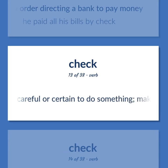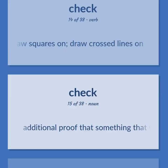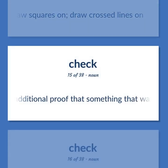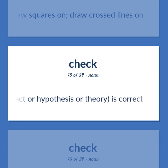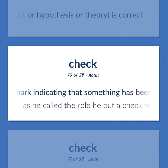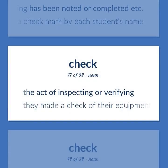Be careful or certain to do something; make certain of something. Mark into squares or draw squares on; draw crossed lines on. Additional proof that something believed — some fact or hypothesis or theory — is correct. A mark indicating that something has been noted or completed. As he called the role he put a check mark by each student's name. The act of inspecting or verifying. They made a check of their equipment.